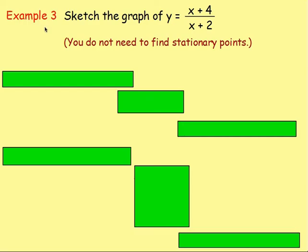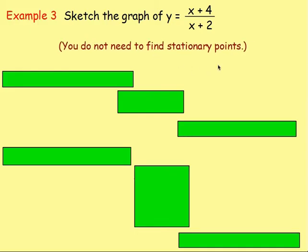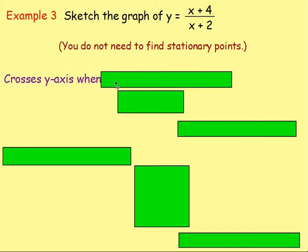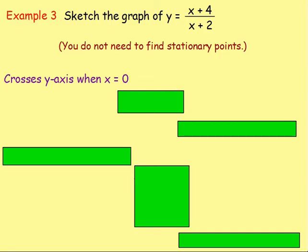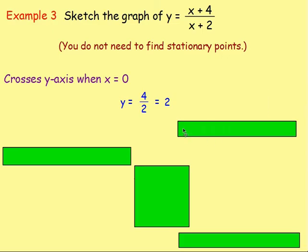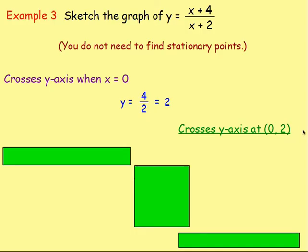We're picking this up with example three. Sketch the graph of Y equals X plus four over X plus two, and you do not need to find your stationary points. Let's first work out where the graph crosses the Y-axis — that's when X equals zero. When X equals zero, Y equals zero plus four over zero plus two, which is four over two, giving you two. So the graph crosses the Y-axis at (0, 2).